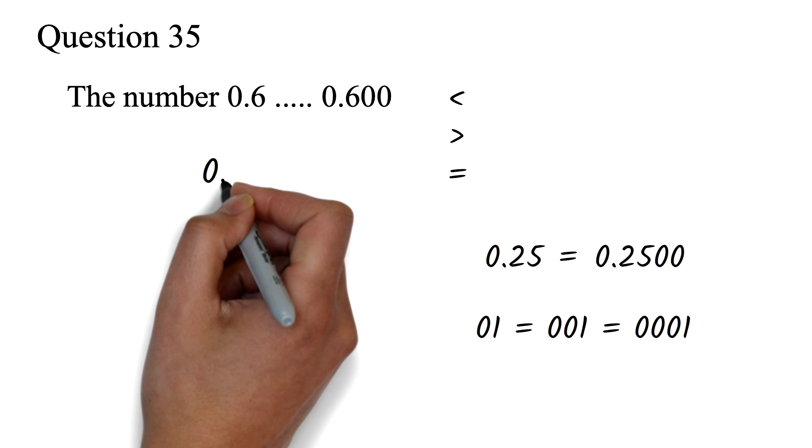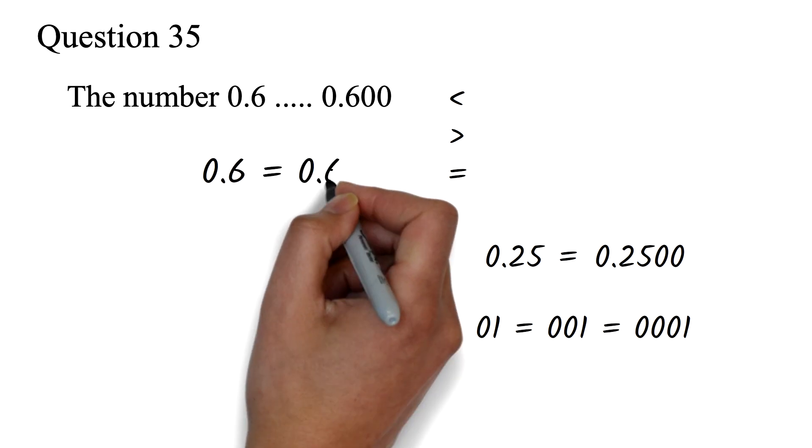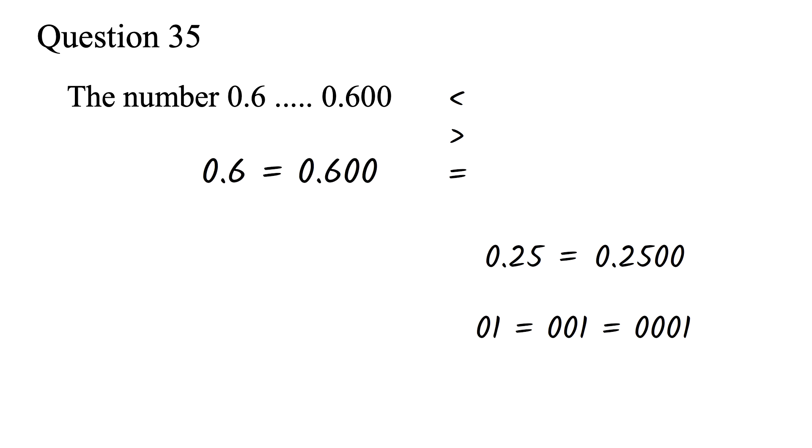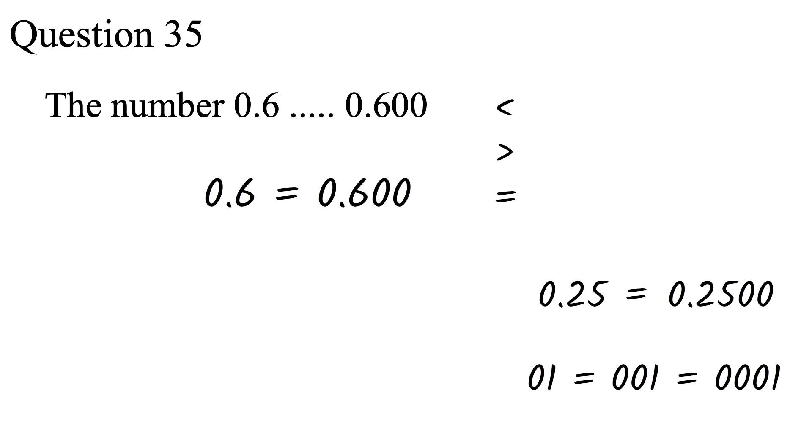So for this question, we can say 0.6 is equal to 0.600 since we basically just added zeros to the back.